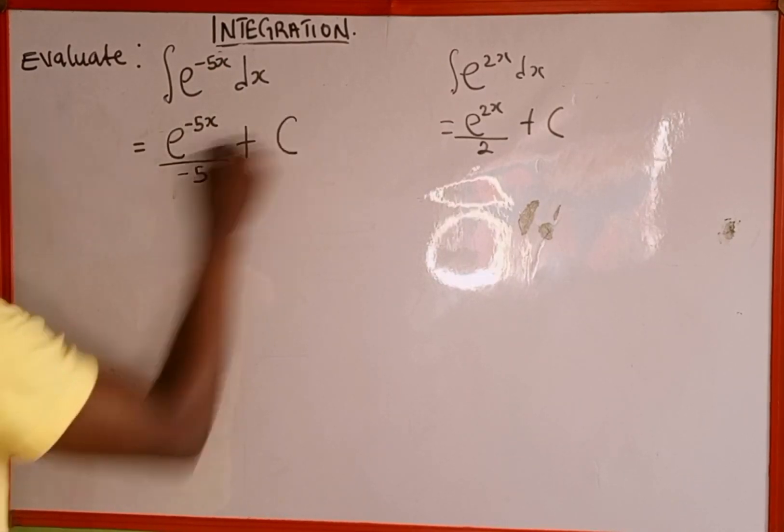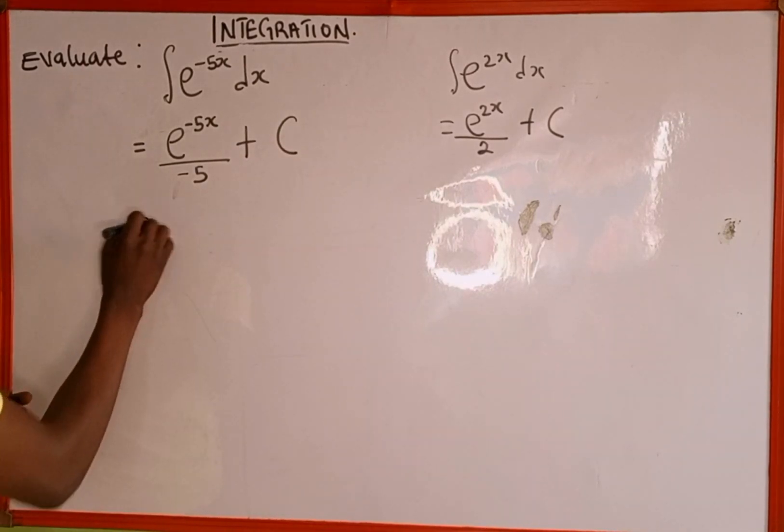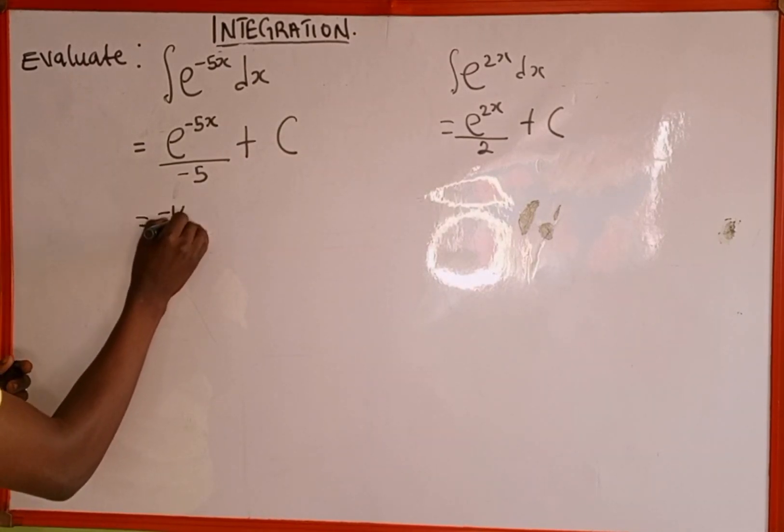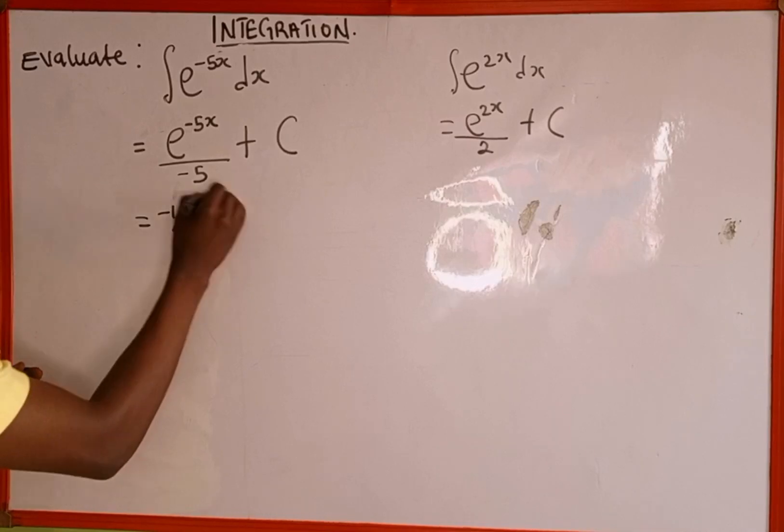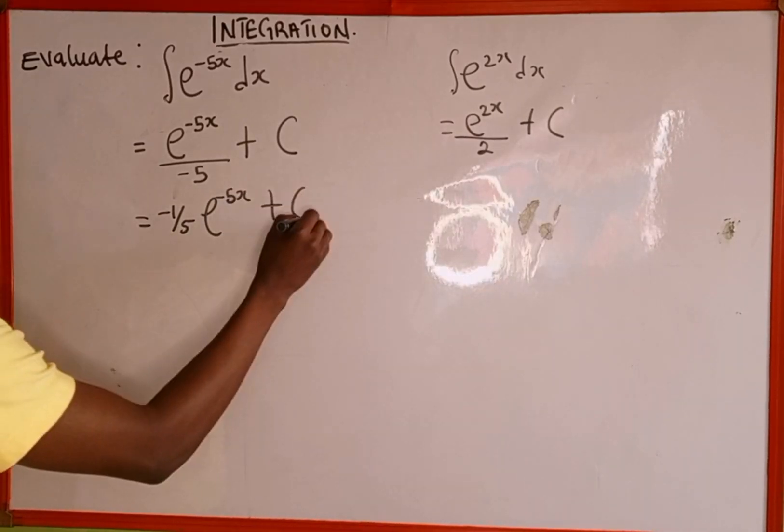Then plus the integration constant. So this equals -1/5 times e^(-5x) plus C.